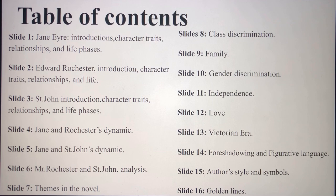The themes in the novel include class discrimination, family, gender discrimination, love, the Victorian era, foreshadowing, and figurative language. The author's style includes the gothic atmosphere of Thornfield. There are also lots of symbols and foreshadowing, and then golden lines — all of which correspond to the themes.